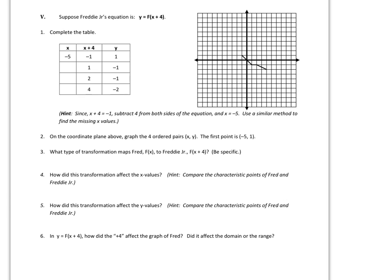Think about it in terms of what x is trying to do to get back to f(x). What would you do to x plus 4 to get back to just x? You'd subtract 4. So I'm going to subtract 4 from each of the x-values: negative 1 minus 4 is negative 5, 1 minus 4 is negative 3, 2 minus 4 is negative 2, 4 minus 4 is 0. Now I'll graph the x and y columns to see what happens with f(x + 4).